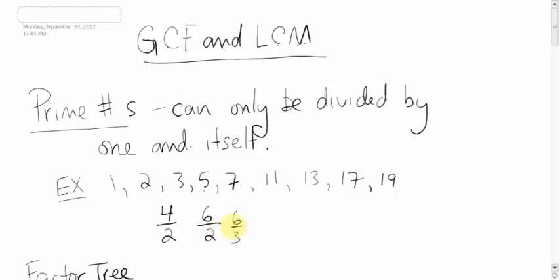The opposite of prime is composite, so non-prime numbers would be composite numbers. 7 is prime. 9 is not prime — remember, 9 can be divided by 3. And up you go. 15 is not prime. 19 is the last one I've written down, but this list goes on forever.